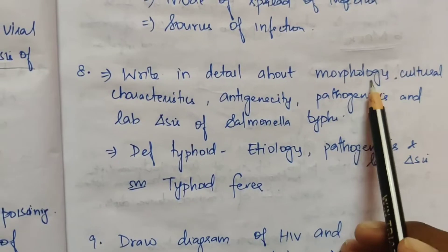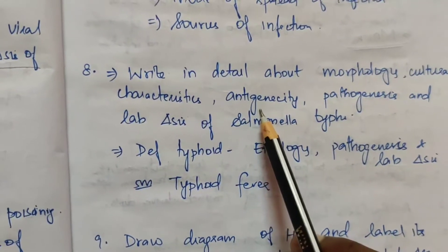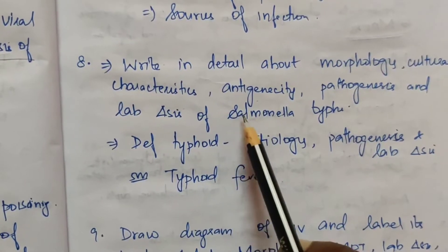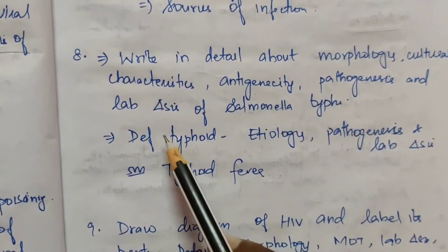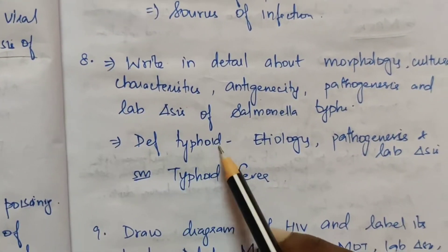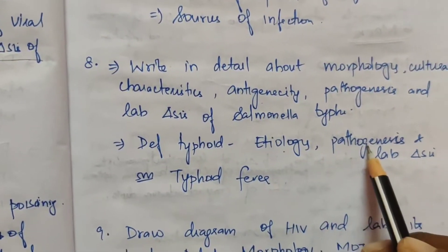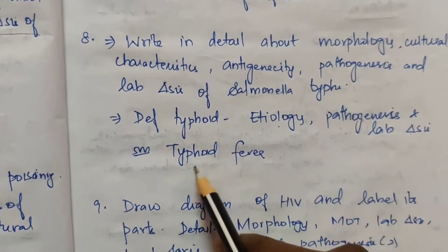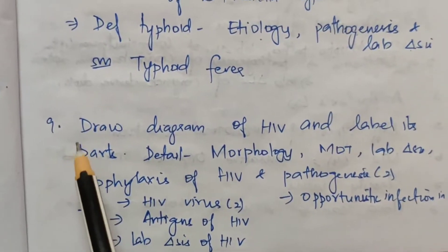The eighth topic: write in detail about morphology, cultural characteristics, antigenicity, pathogenesis, and lab diagnosis of Salmonella typhi. Define typhoid, mention its etiology, pathogenesis, and lab diagnosis. For 5 marks, typhoid fever is an important topic.